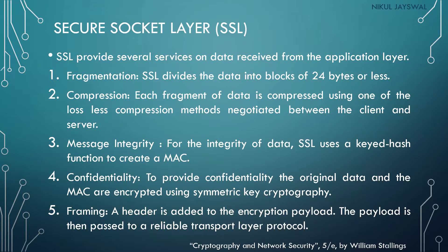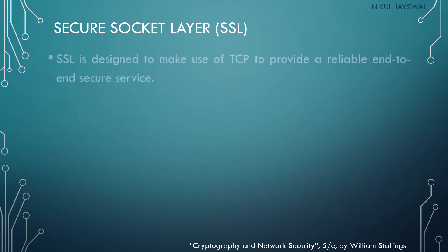SSL provides five functionalities: fragmentation, compression, message integrity, confidentiality, and framing. HTTP protocol does not provide integrity and confidentiality, so to provide these to HTTP we use SSL. After implementing all these mechanisms, the packet is passed to the transport layer protocol. SSL is designed to use TCP to provide a reliable end-to-end secure service.